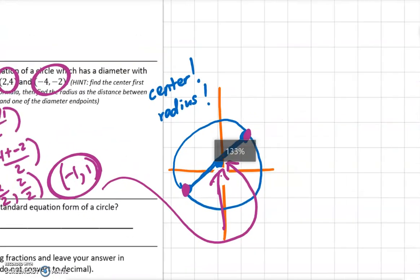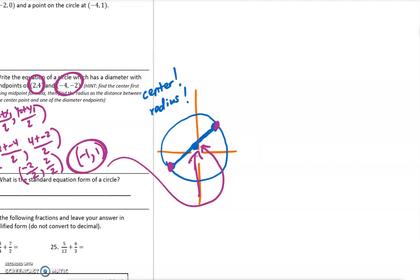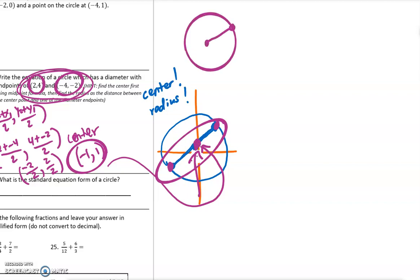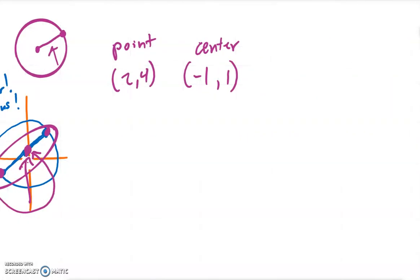Now we need to find the radius length. We can find the distance from the center to one of the endpoints — that gives us the radius. We know the center is negative 1, 1, and we'll use the point 2, 4 on the circle. If we find the distance between these two points, we have the radius length. Since we don't have a graph, we'll use the distance formula.